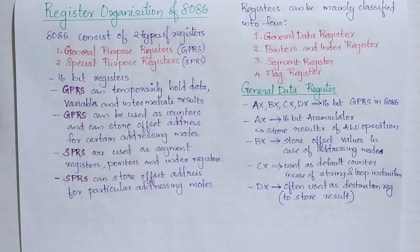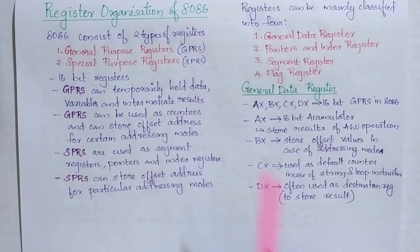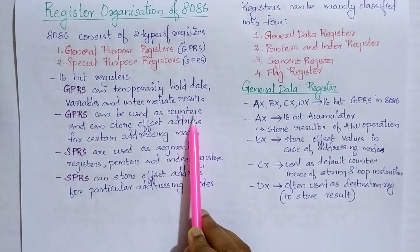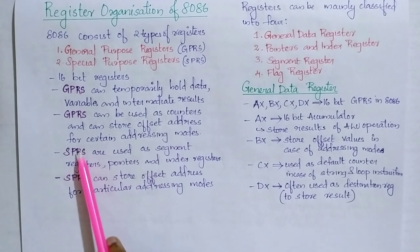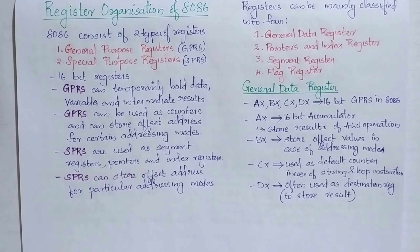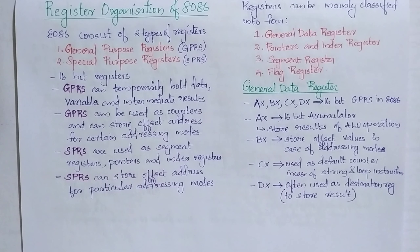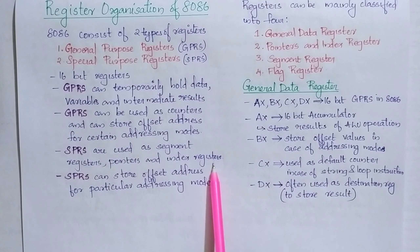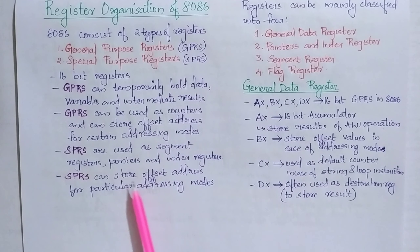Intermediate results means the results after ALU operations. GPRs can also be used as counters and can store the offset address for certain addressing modes. The second type, SPRs, are used as segment registers, pointers, and index registers. SPRs can store the offset address for particular addressing modes.